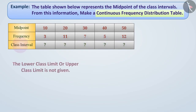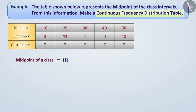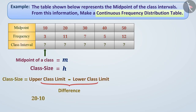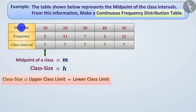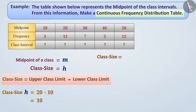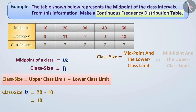We are not given the lower class limit or upper class limit of any class interval. Suppose the midpoint of a class is M and the class size is H. The difference in the upper class limit and lower class limit of the class interval is called its class size. Since the midpoint is in the middle of the class interval, the difference between any two consecutive midpoints is the same as the class size. In this way, we find the class size H by the difference of consecutive midpoints: 20 minus 10 equals 10.